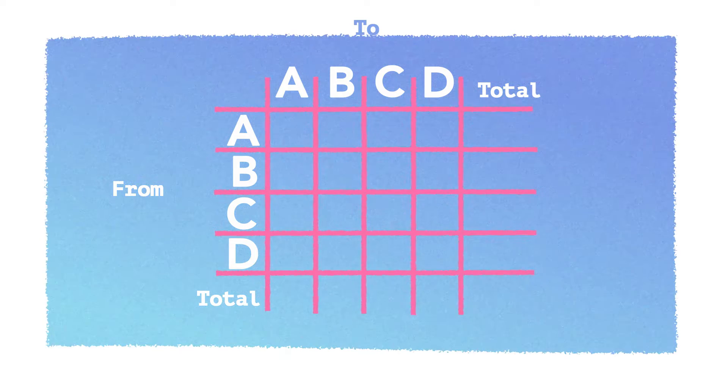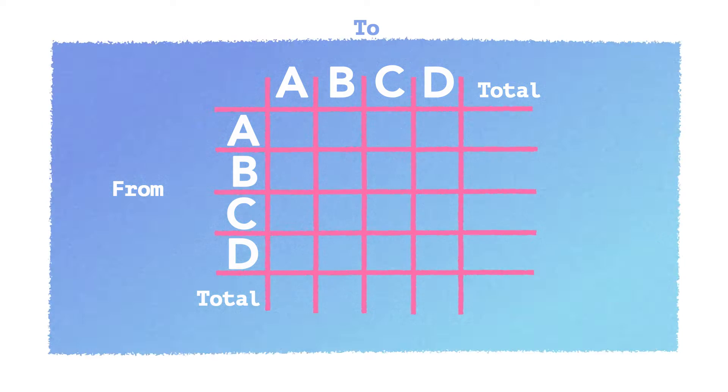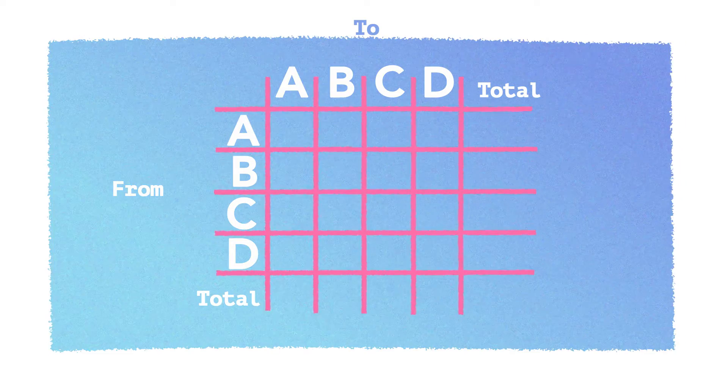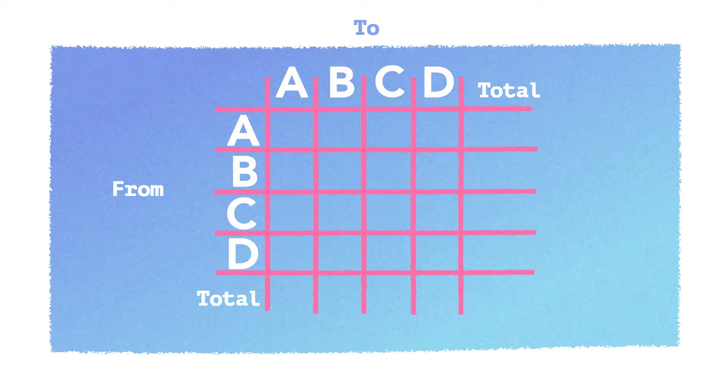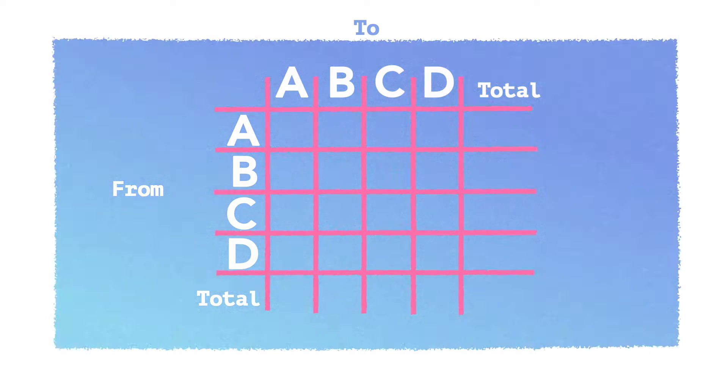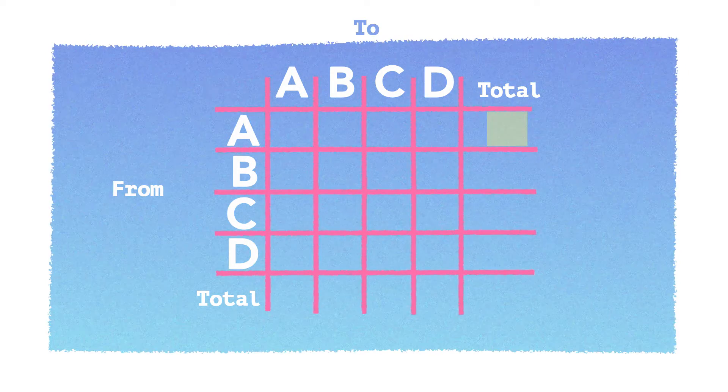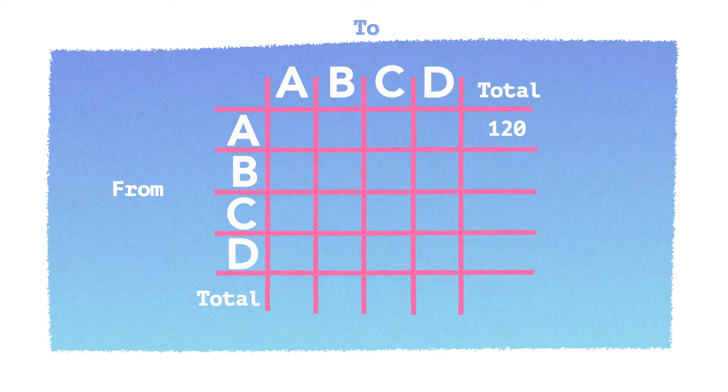So from A, there is only one junction that counts, this is junction one. And we can count who goes left at the top, who goes straight ahead, who goes right. And we add that all up. So 20 plus 40 plus 60. And we get 120.